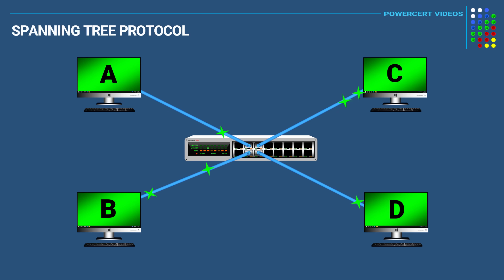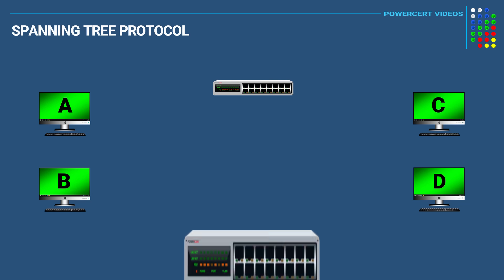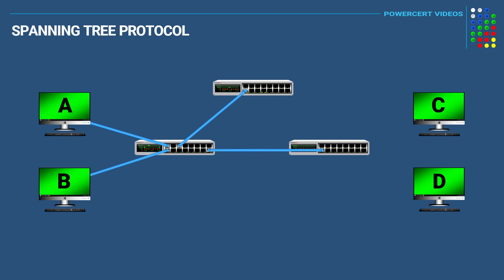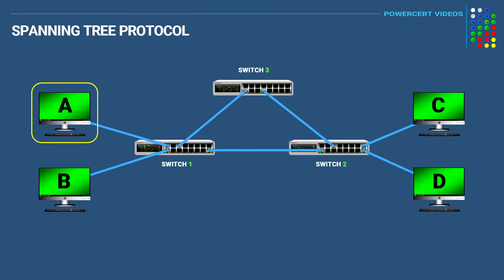However, in some cases, network administrators may want to add redundancy to their network in case of a switch or cable failure. So instead of having one switch, they may use multiple switches. For example, this network is using three switches, which means that this computer has two options it can take to communicate with this other computer — it can use this path here, or if this link goes down, it can use this alternate path instead.